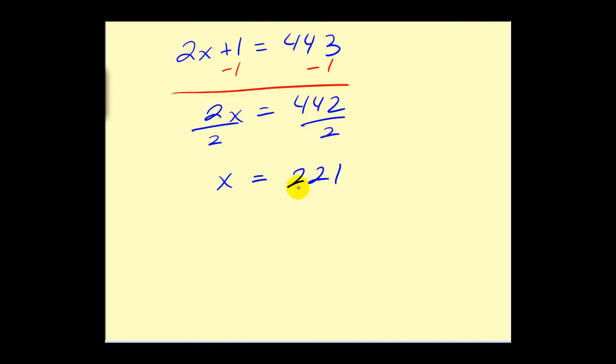So the numbers would be 221 and the next one would be x plus one or 222. So those are the numbers we're looking for in this question.